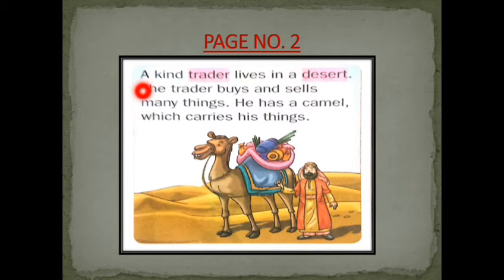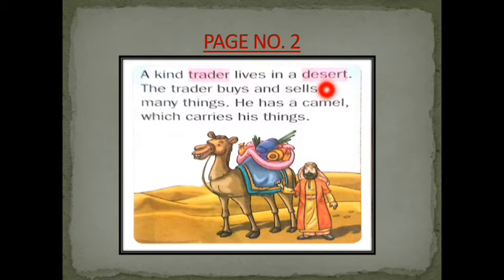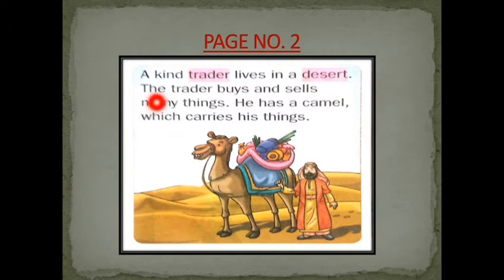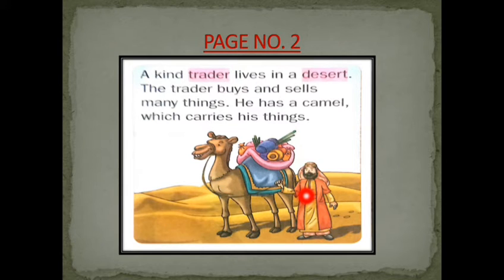Children, you have to put your finger where I am reading. Take out page number two from your course book. 'A kind trader lives in a desert.' Now children, in this sentence you can see two words are highlighted. Trader means a person who buys and sells things. Desert means a hot dry place where very few plants grow and it receives very less rainfall. The trader buys and sells many things and has a camel which carries his things.